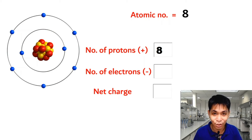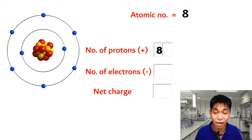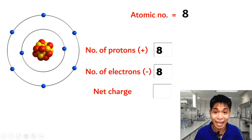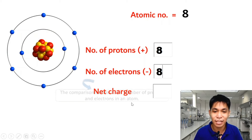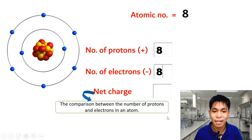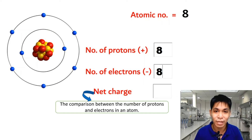In a neutral atom, the number of protons and the number of electrons are equal. If our atom is neutral, the number of electrons is equal to 8. Net charge is defined as the comparison between the number of protons and electrons in an atom.